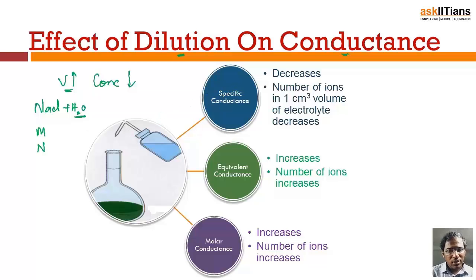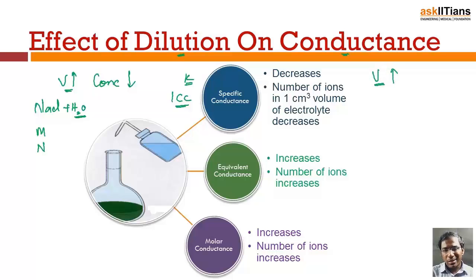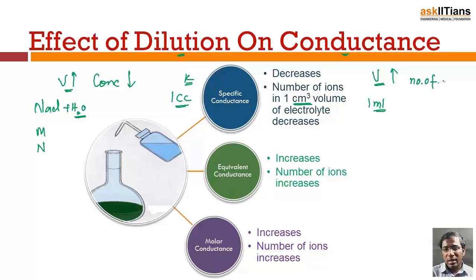First, let's look at specific conductance K. Specific conductance is the conductance offered by one centimeter cube volume of the electrolytic solution. Upon dilution, the volume of the solution increases but the number of ions in 1 cc or 1 mL volume will decrease. We are increasing the volume but not changing the total number of ions, so the number of ions per unit volume decreases, which decreases the specific conductance of the solution.